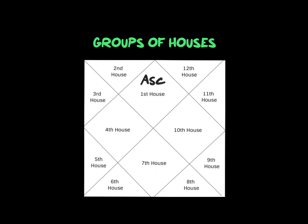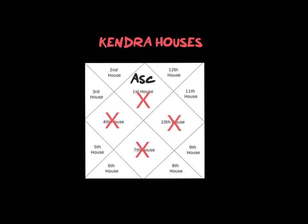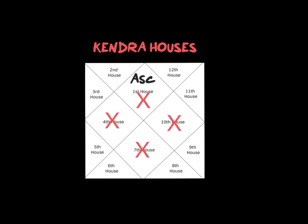Let me introduce you to the groups of houses. The first set of important houses are called Kendra or Quadrant Houses — the 1st, 4th, 7th, and 10th. They form the big square in the middle of the chart. Any planets placed in these four houses will give you power and strength, pushing you forward. These houses represent the engine of your chart, giving you energy, motivation, and getting you going in life. When there are no planets at all in this central box, you can generally lack motivation and direction, at least for some part of your life.